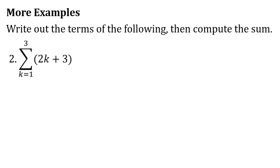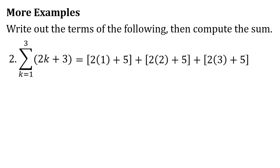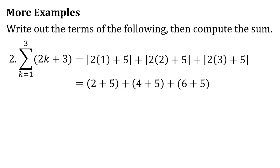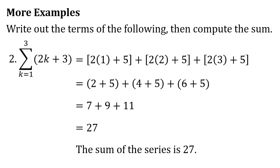Second example: the sum of 2k plus 3 as k goes from 1 to 3. We substitute k as 1, 2, and 3, giving us (2×1 + 3) plus (2×2 + 3) plus (2×3 + 3). That equals 5 plus 7 plus 9, which simplifies to 7 plus 9 plus 11, and the total is 27. So the sum of the series is 27.